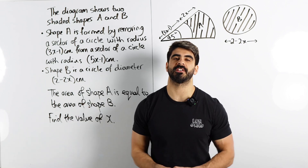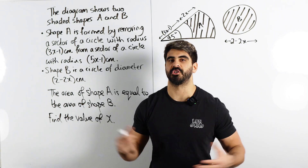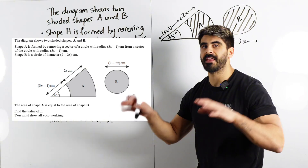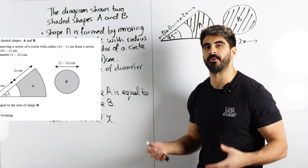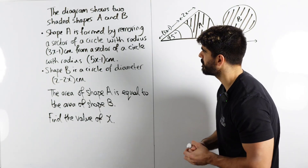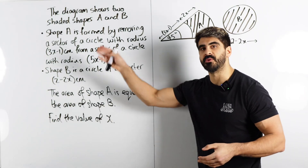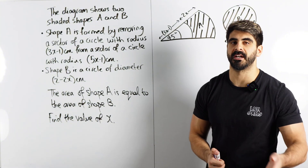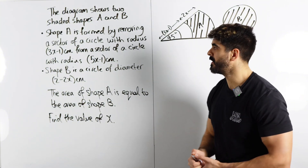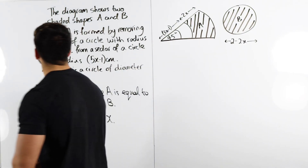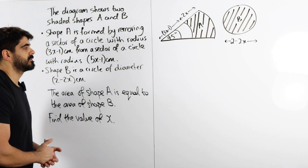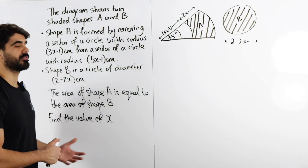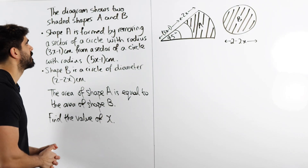Five mark GCSE question. As you can see from the screenshot, it's a cheeky five marker that most students fail to do because it comes up towards the end of the paper. They see all this content and a picture and don't want to do it. But if you're in the middle of your main exam, you can't have that attitude. Let's aim for at least a couple of marks, but really we should be aiming for all of them. I've got you guys.